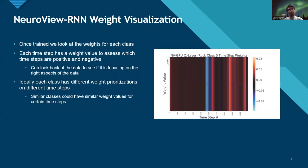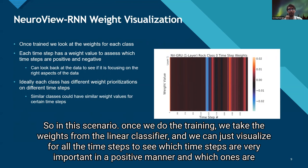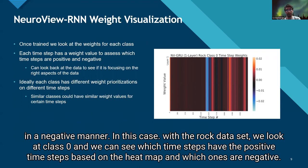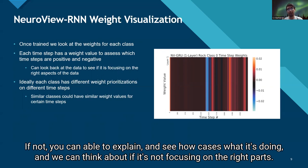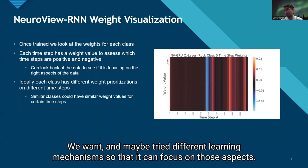Once we do the training, we take the weights from the linear classifier and visualize them for all time steps to see which time steps are very important in a positive manner and which ones are in a negative manner. With the rock dataset, we look at class zero and can see which time steps have positive or negative values based on the heat map. You can map back to the data and see if it's focusing on portions of the input you wanted it to focus on. If not, you can explain what it's doing and try different learning mechanisms to focus on the right aspects.